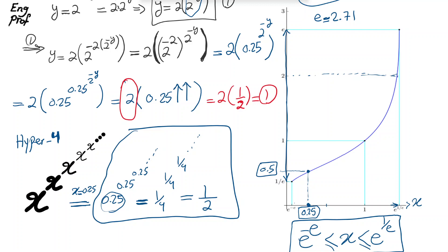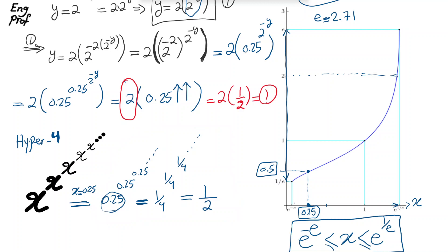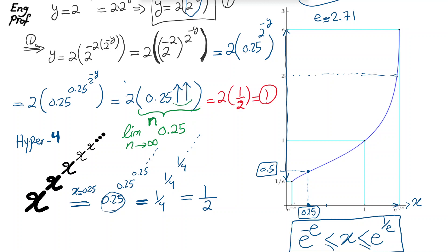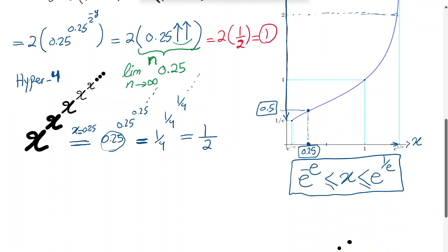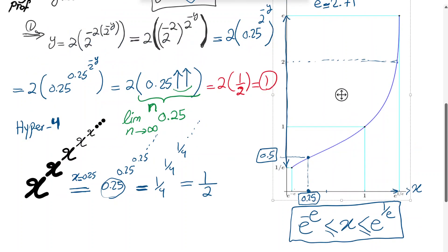Bear in mind that another notation for this kind of tetration scenario is using a left exponent: a superscript n written to the left of 0.25, denoting 0.25 raised to itself n times. Then we take the limit as n goes to infinity, which means keep raising 0.25 to the power 0.25 n times and let n go to infinity — this is the infinite power tower notation.